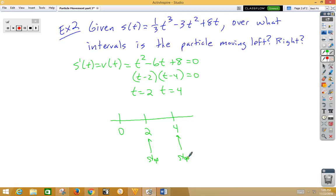Now let's see what's happening over the interval from zero to two. If we pick a one and we plug in, we get a negative value times a negative value is a positive value. So the particle is moving to the right.